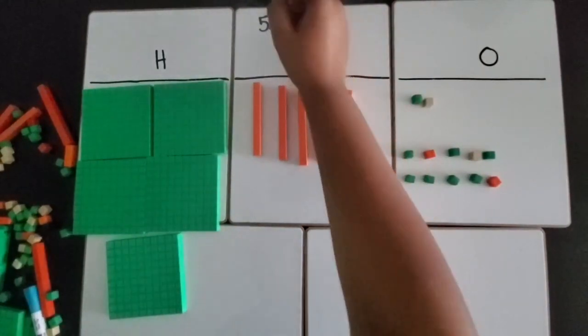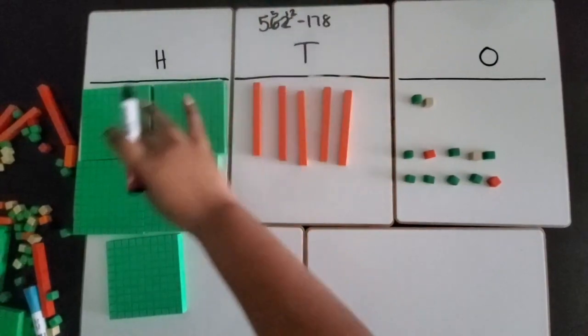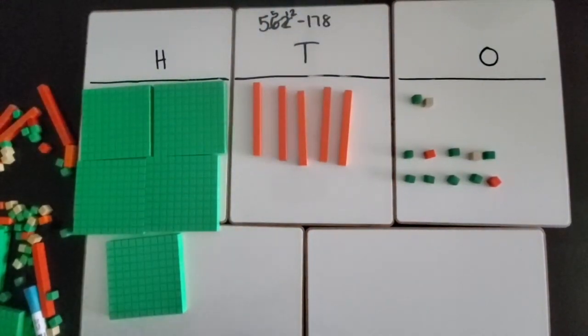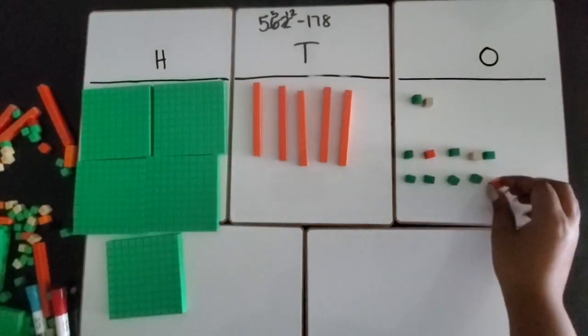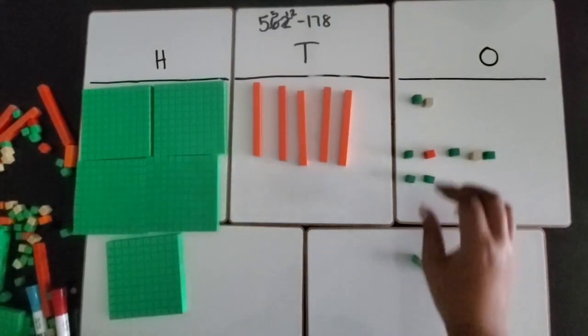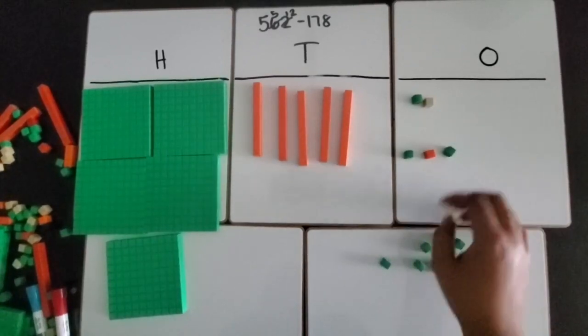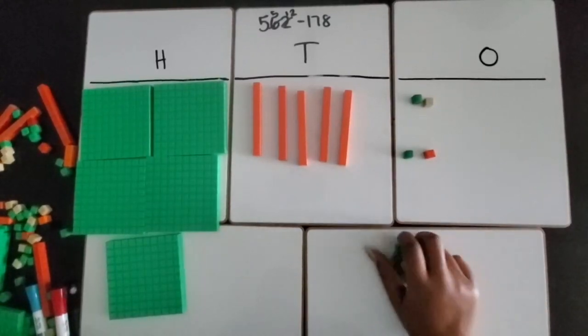I still have my 500, nothing's changed over here. Now I have enough ones to subtract eight ones. One, two, three, four, five, six, seven, eight. So I took away eight ones, now I have four ones remaining.